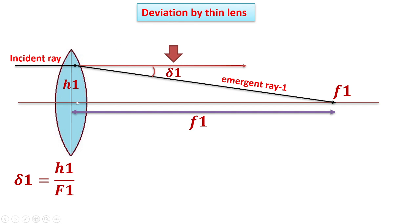This is the incident ray; this is the lens. So deviation delta1 takes place. The incident ray becomes emergent ray 1, forming an image at a point on the principal axis at focal length F1. So delta1 — the deviation produced by the lens — is equal to H1 divided by F1.